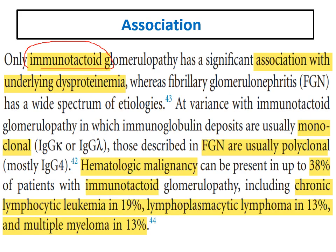Immunotactoid glomerulonephritis is usually associated with paraproteinemia. This is very important. It is characterized by monoclonal immunoglobulins — the immunoglobulin deposits are usually monoclonal, not polyclonal. In fibrillary it is mostly polyclonal, but in immunotactoid it will be either kappa or lambda.